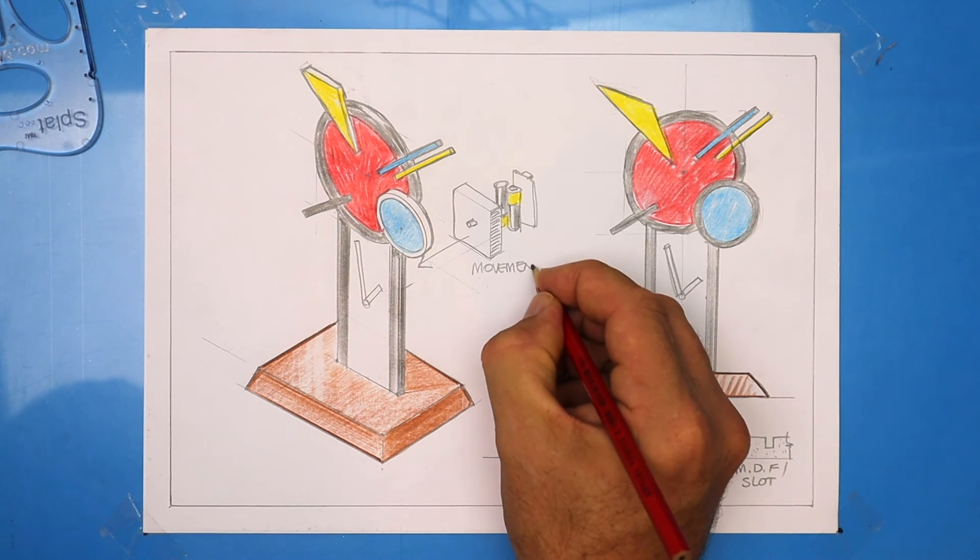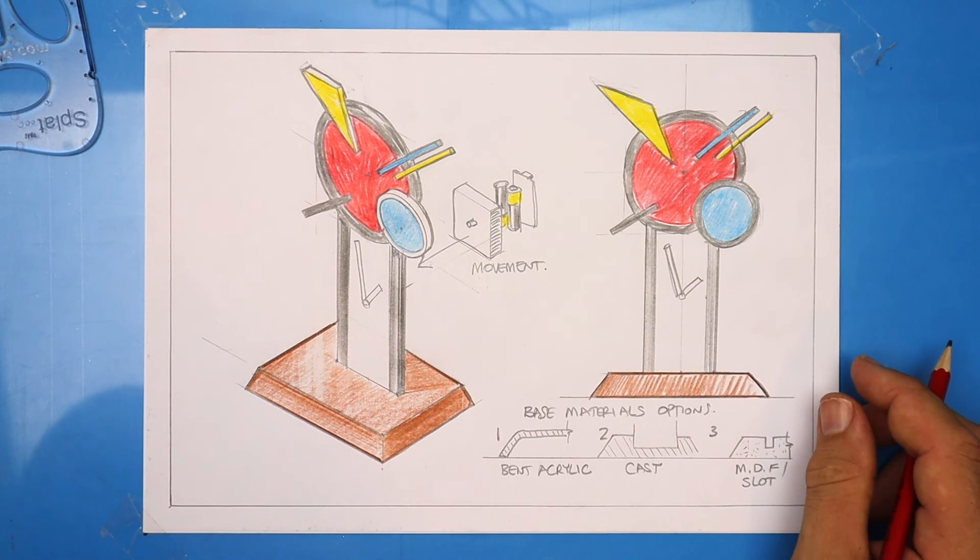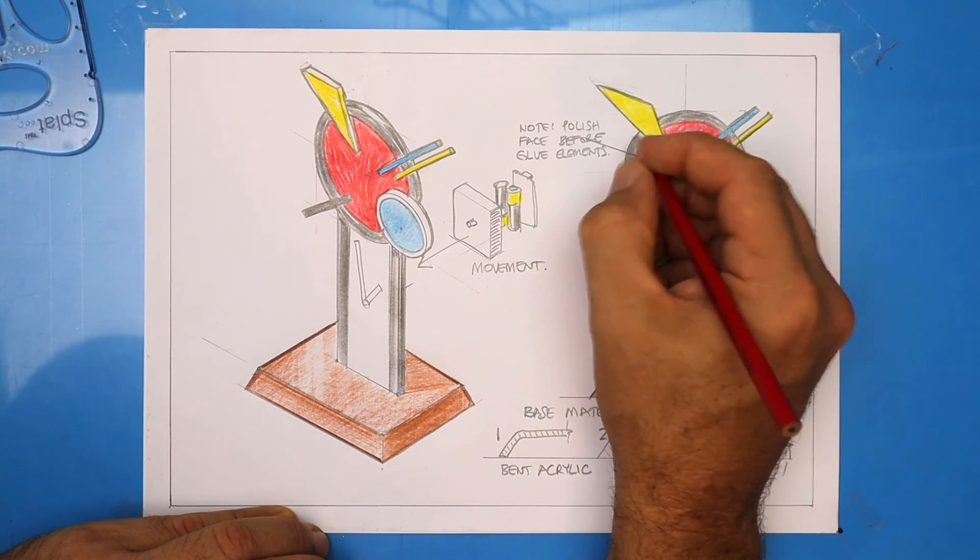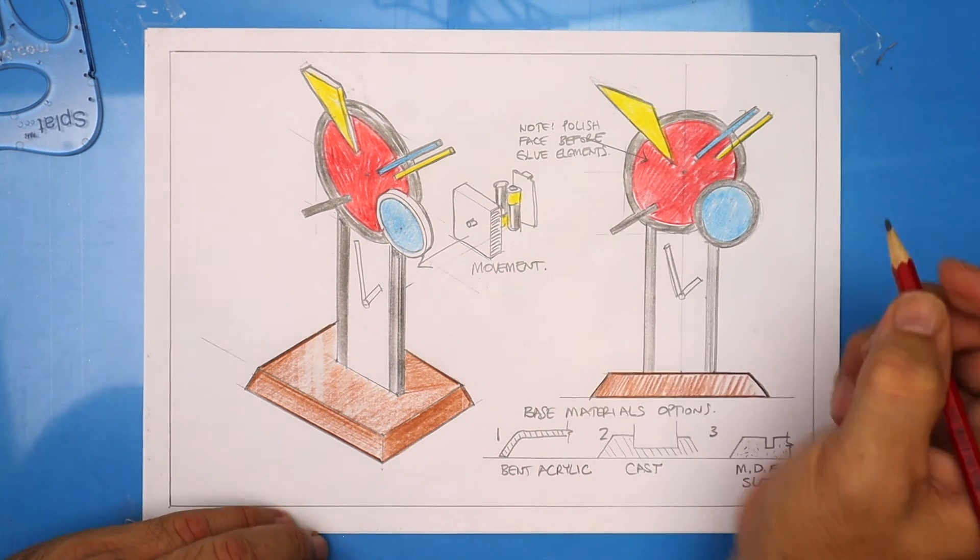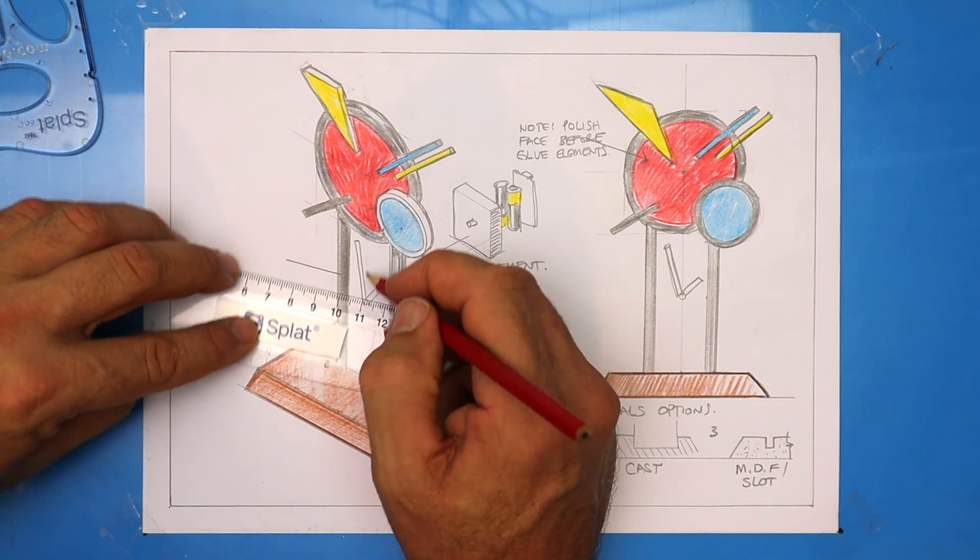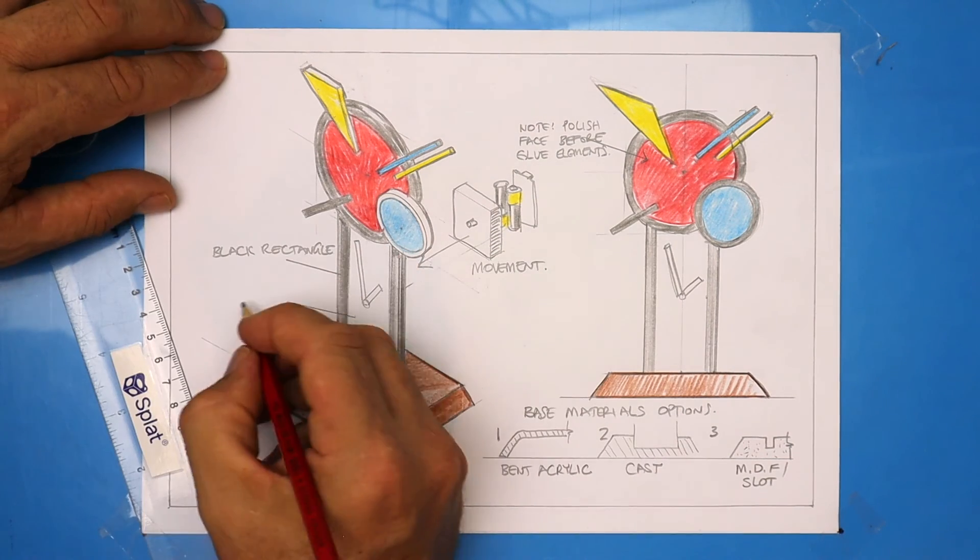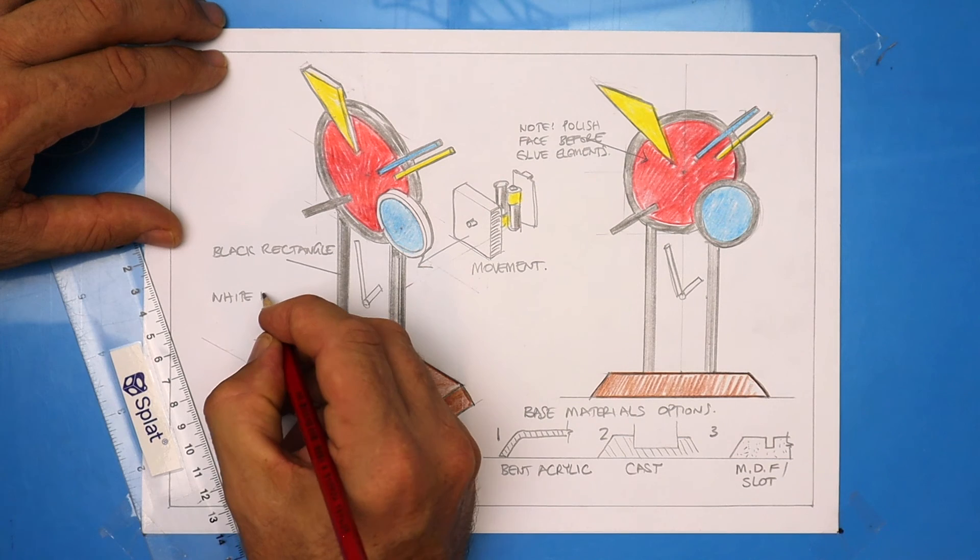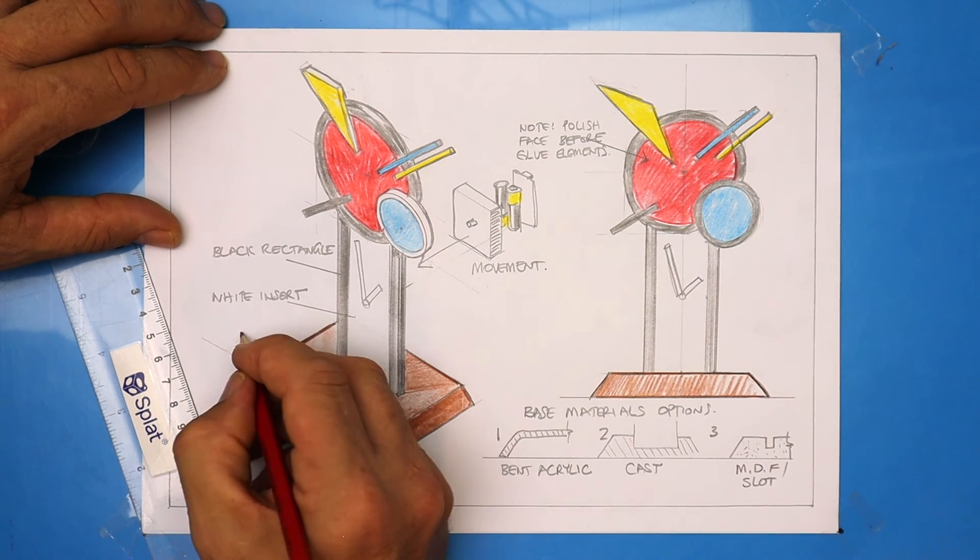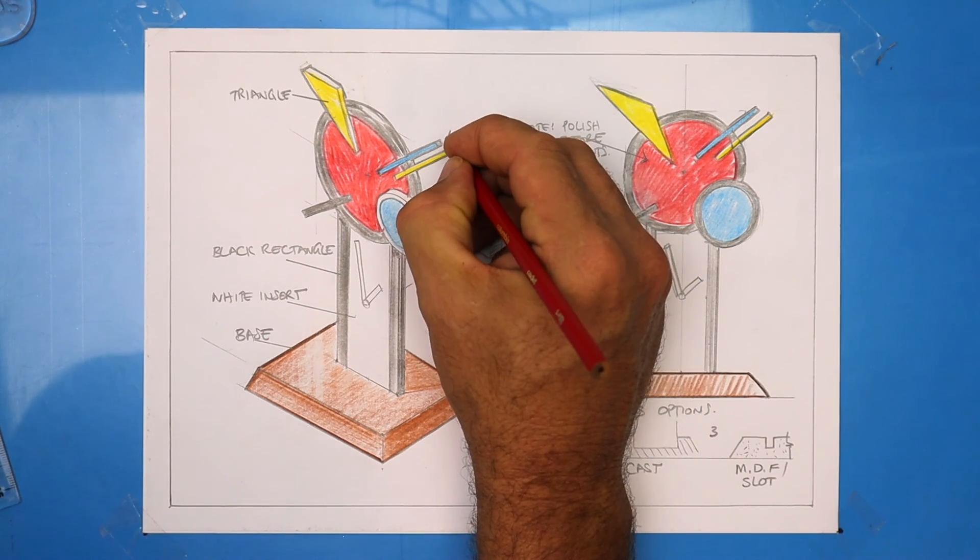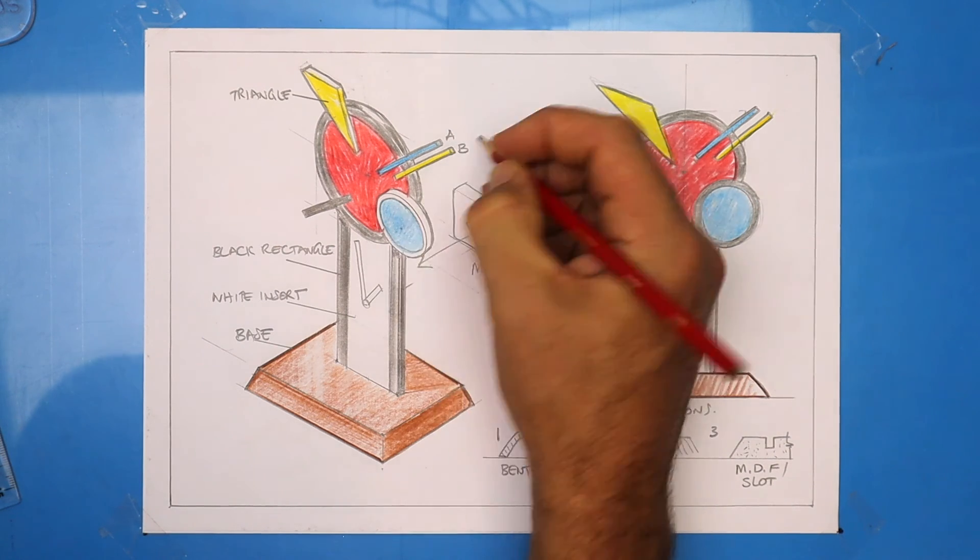Try to use arrows and annotate the names of the components, as well as any instructions, like it might be wise to polish the face of the clock before I glue on the design elements. Labeling multiple parts is often tidier if you keep these leader lines parallel, rather than all higgledy-piggledy.